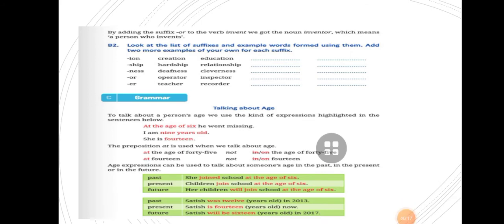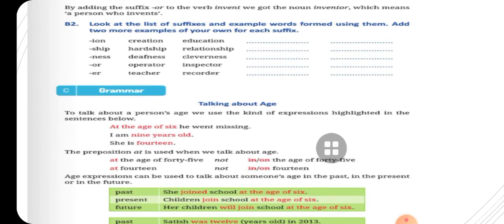Next exercise is the grammar part, talking about age. To talk about a person's age, we use the kind of expression highlighted in the sentences below. At the age of 6, he went missing. I am 9 years old. She is 14. The preposition at is used when we talk about age. We use at the age of 45, not in or on. At 14, not in or on, we use only at.